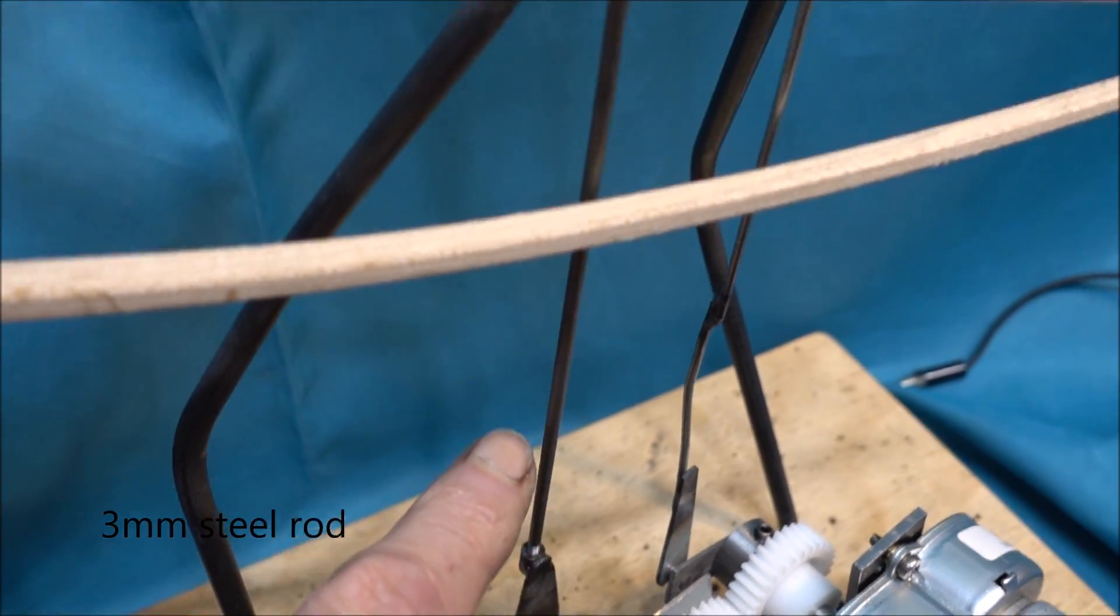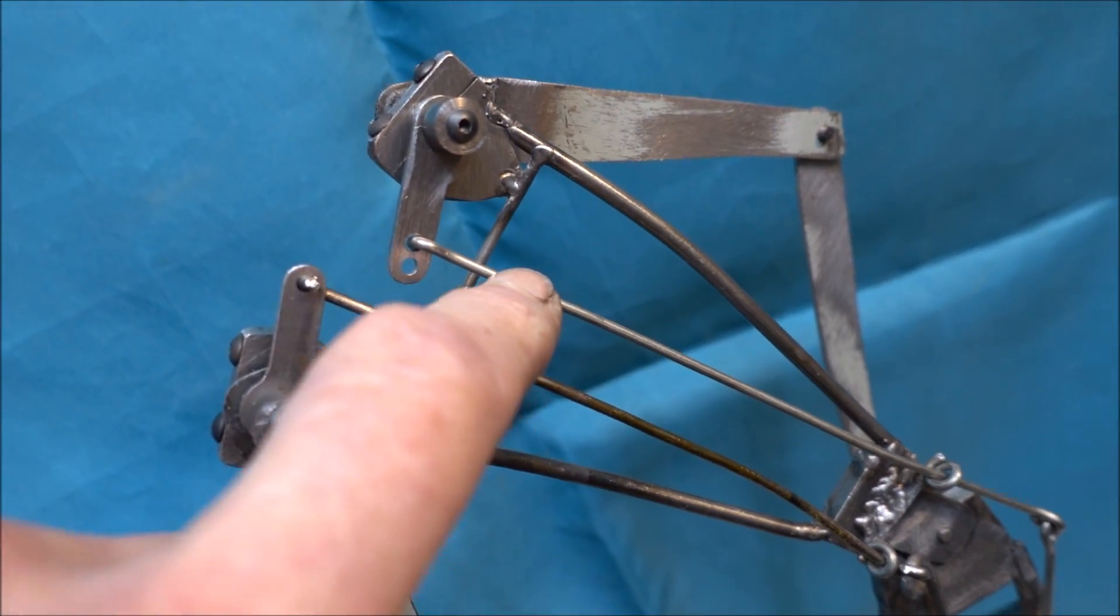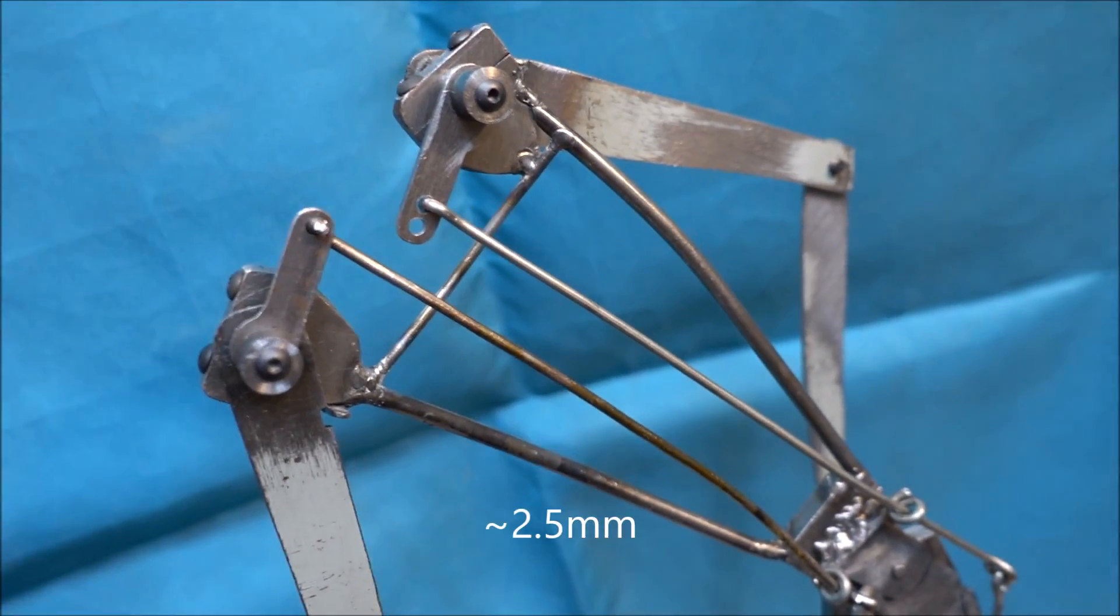I might saw it off and weld on the thinner rod, which is actually just coat hanger wire, but that sort of works better.